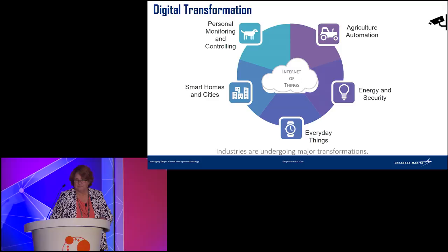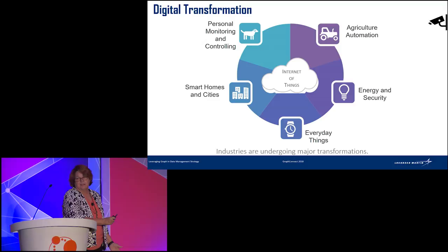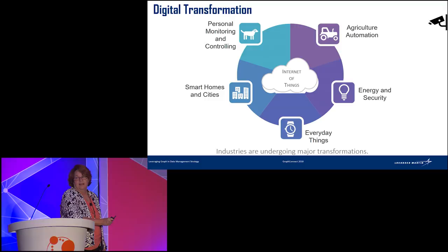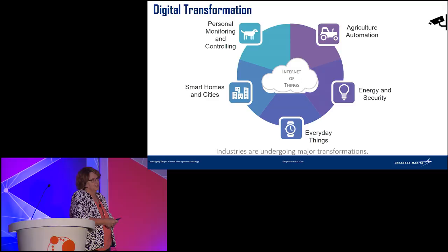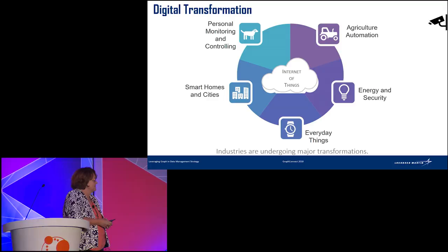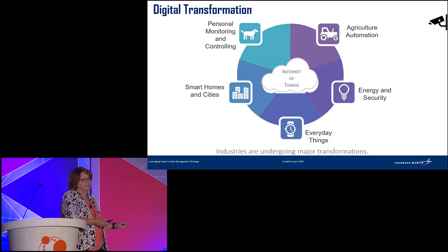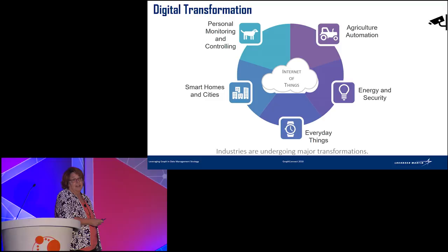We're undergoing a digital transformation — we're all part of that. All kinds of devices now collect and share information. My dog has a chip on it in case it gets lost. Our homes are getting smarter. We all have thermostats that learn and smart speakers. Industry is being transformed as well — agriculture, energy, security markets. I have a watch on my wrist that spies on me all day long and tells my phone everything. Our industry at Lockheed Martin is really undergoing a transformation with the onset of the internet of things and smart factories.